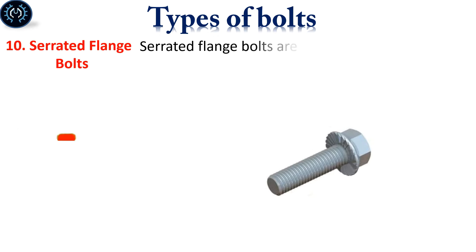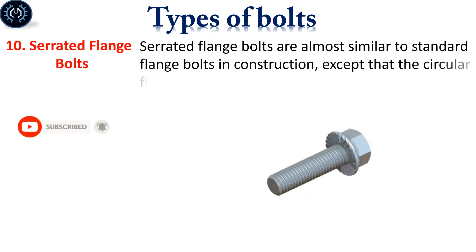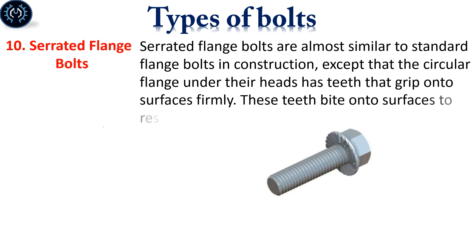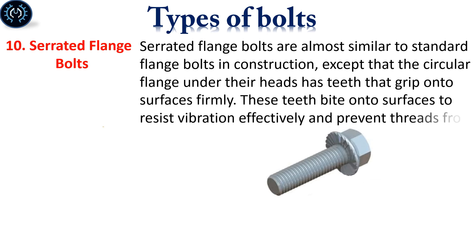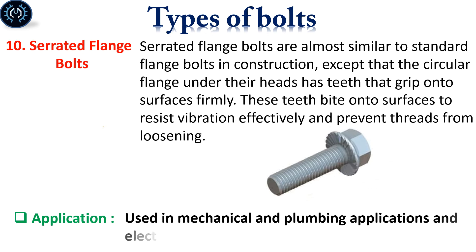Serrated flange bolts are almost similar to standard flange bolts in construction, except that the circular flange under their heads has teeth that grip onto surfaces firmly. These teeth resist vibration effectively and prevent threads from loosening. They are used in mechanical and plumbing applications and electronic product casings.